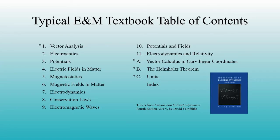Here, for example, is the table of contents of a popular junior-senior-level undergraduate E and M textbook, Griffiths. Chapter one is vector analysis — a quick little review, and then we move on to the real stuff, right? Kind of like warming up with stretching before we go on our cross-country run.